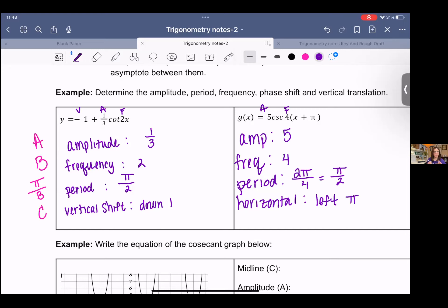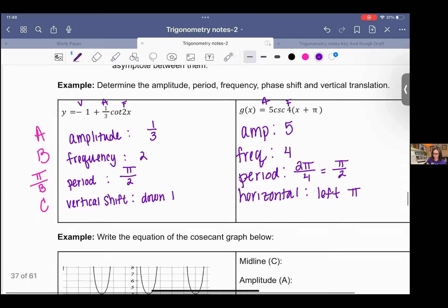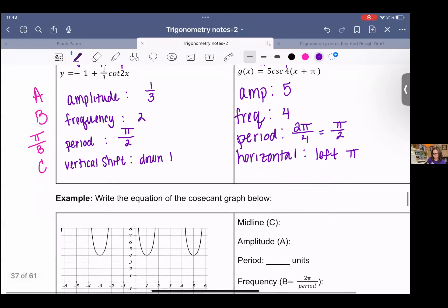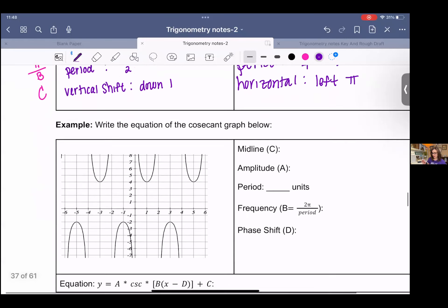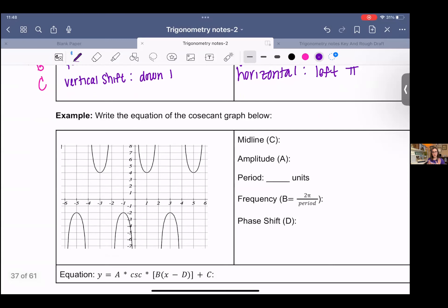And then this does have a horizontal shift. It's plus pi, so that means we're going to go left pi, and no vertical shift. So that's all we have to do for these. No drawing, no sketching. You can if you want to, but that's all we're doing. We're just kind of breaking it apart. All right, in the next one, we are given the graph.